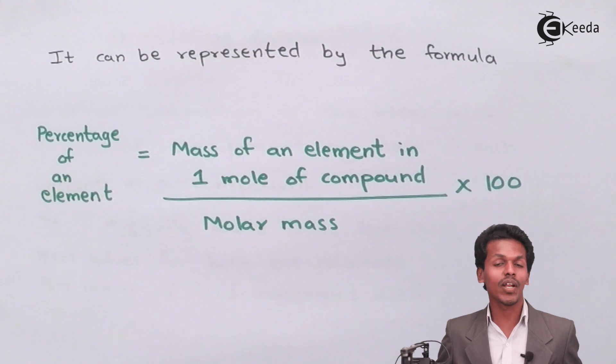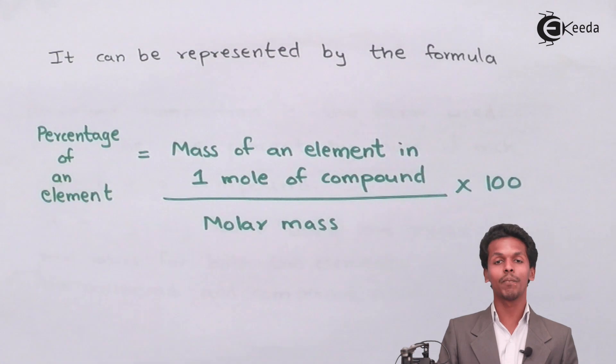We multiply it because we have to calculate the percentage of that element. This is known as the percentage composition.